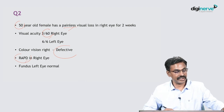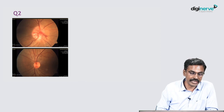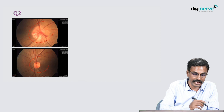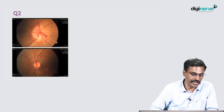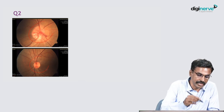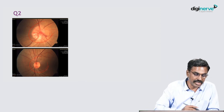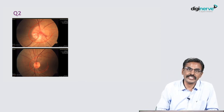Now we will see what the fundus of the right eye looks like. This is the fundus of the right eye, and this is the normal fundus of the left eye. Carefully look at this disc picture. What is the most likely diagnosis? What are the differential diagnoses? Comment on the normal left eye with respect to the cup-disc ratio — it has a significant finding bearing on the diagnosis of the other eye. What are the investigations to be done?